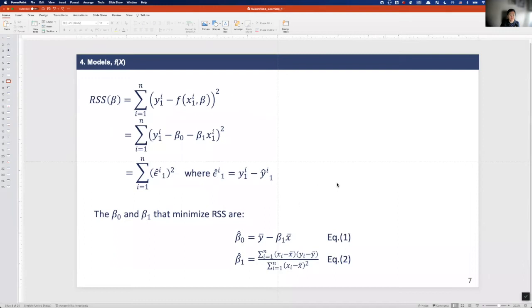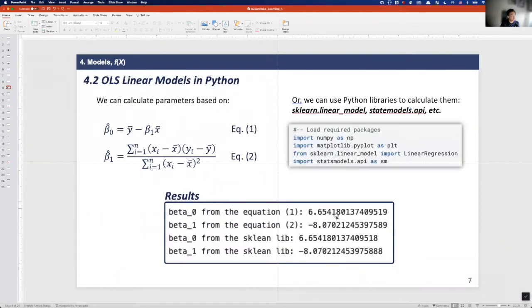So based on these two equations, we get beta 0 and beta 1. With these two equations, we can get the beta 0 and beta 1 around 6.65 and minus 8.07 respectively.